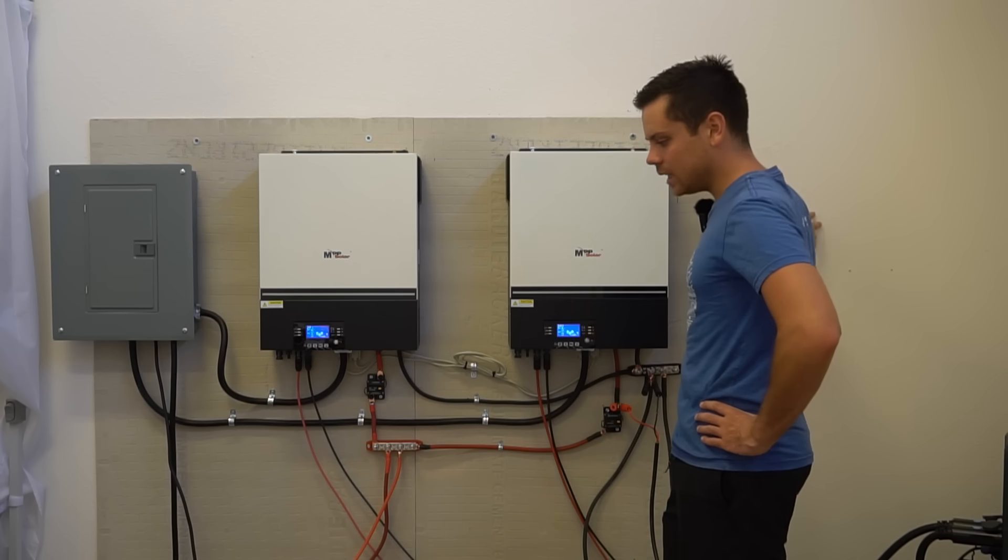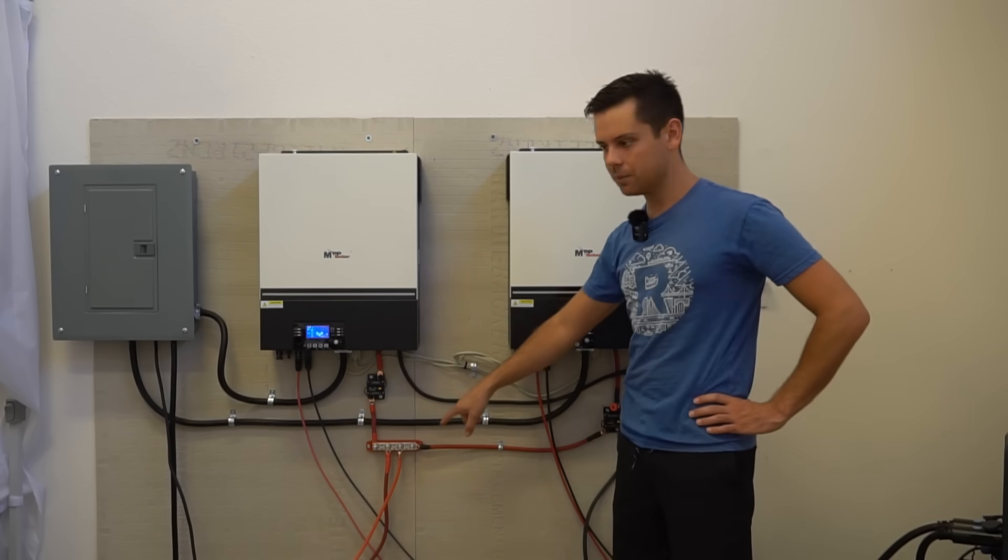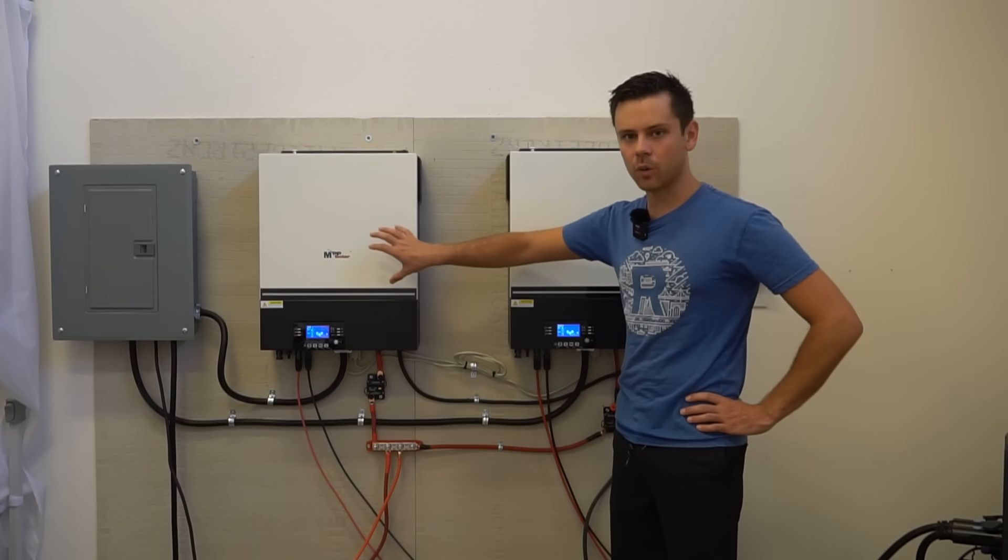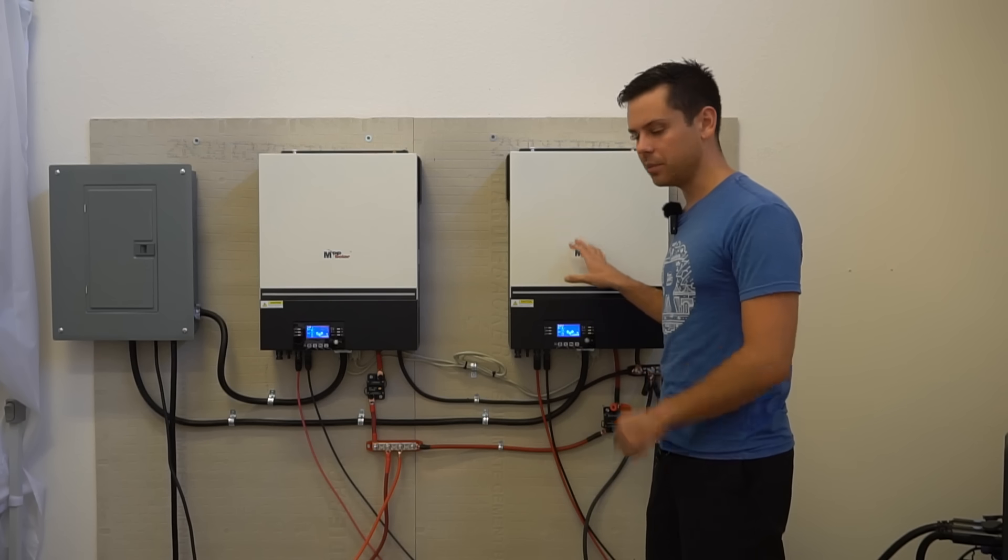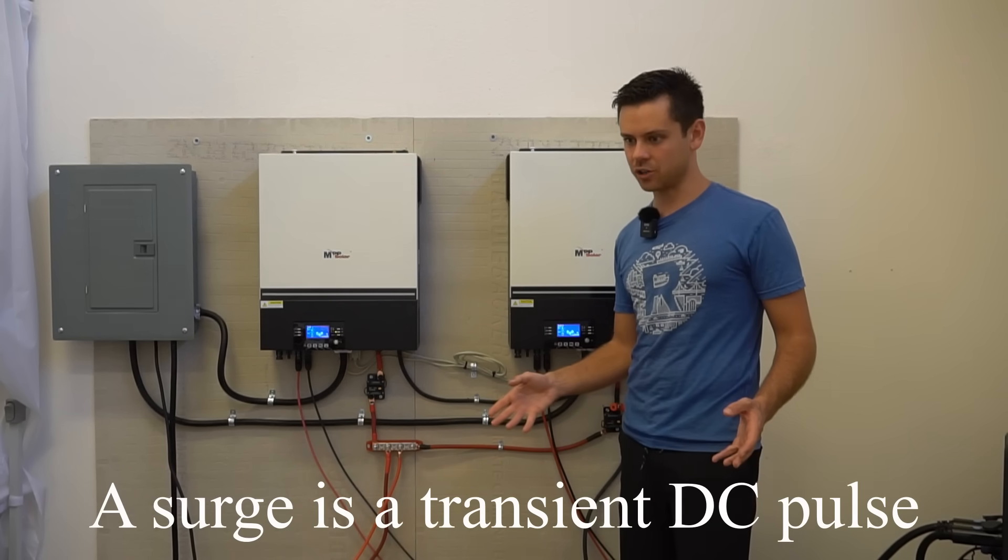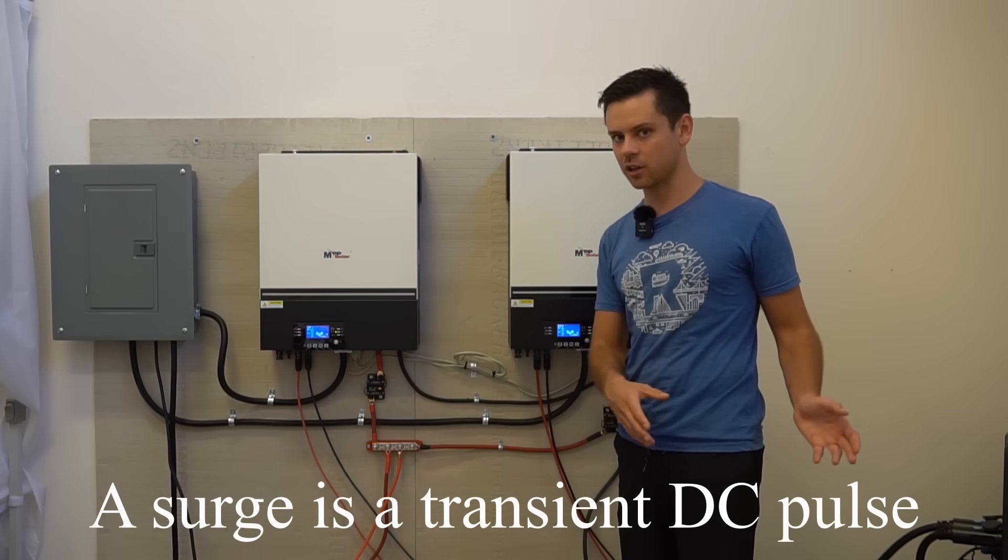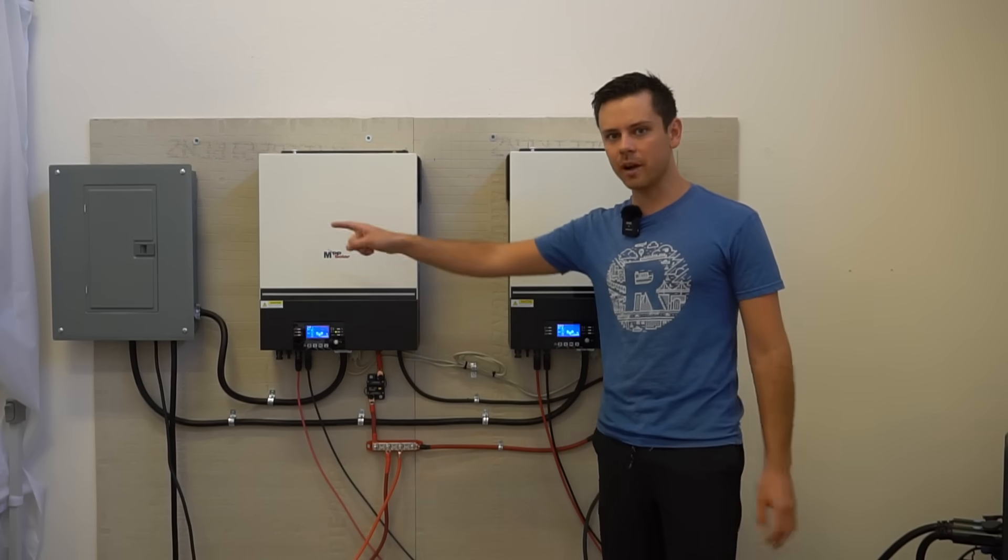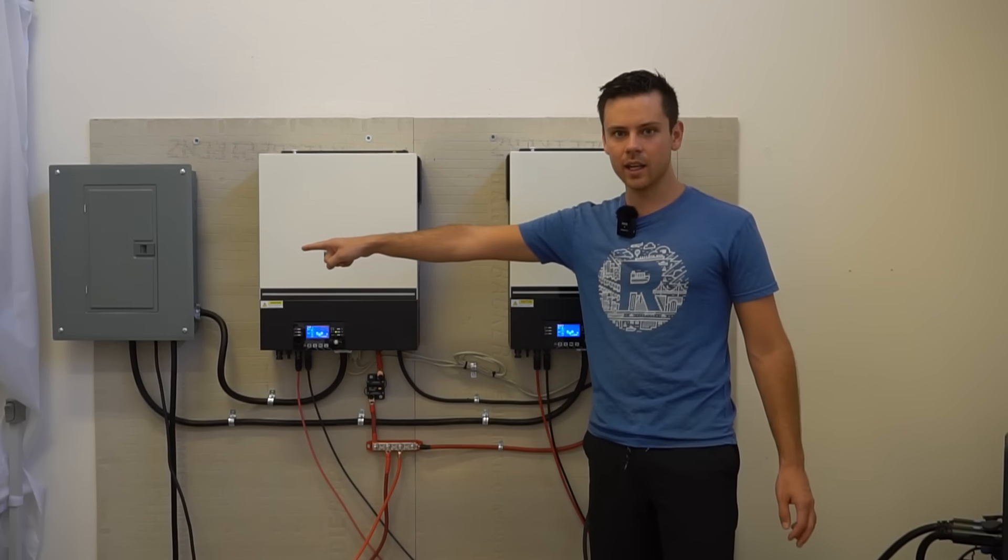But having an SPD connected at the PV input will not mess with our grounding at the AC input on this system. An SPD only dissipates excess charge accumulation in the event of a surge. It is not the same as running my own ground electrode and tying it to this panel.